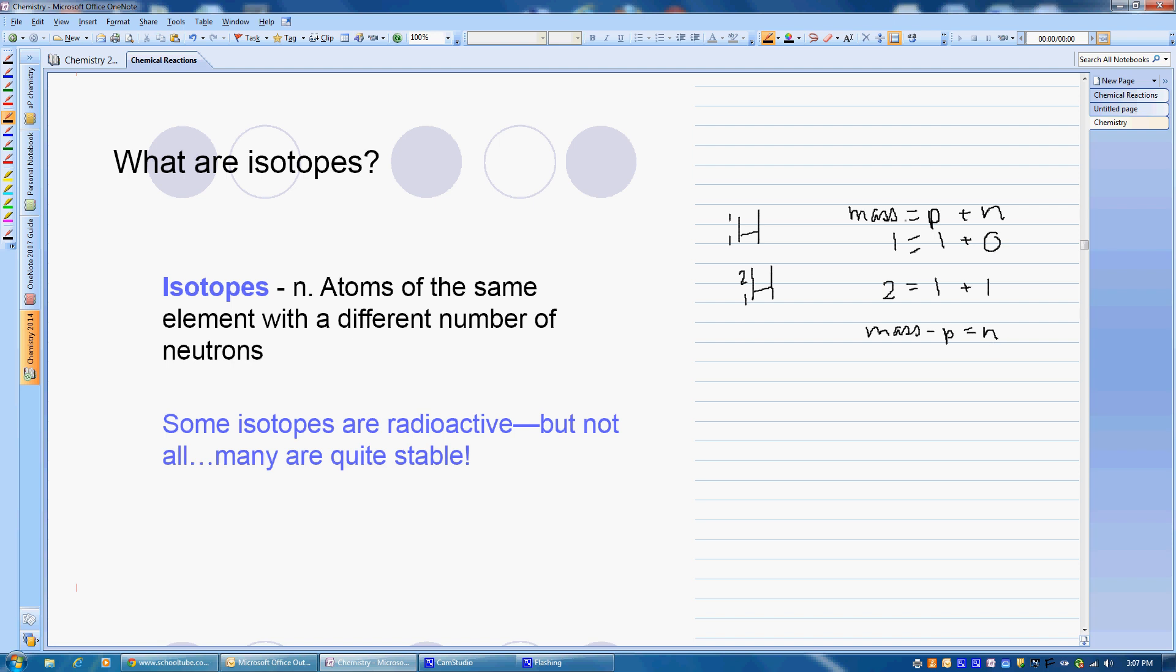Another way of looking at this is you can take mass minus protons to equal your neutrons. So when we have an isotope, this bottom number will always be the same. Right here, because that's your number of protons, that has to stay the same. Atomic number stays the same. But the mass number on top will be different because we'll have different numbers of neutrons, and so our mass will be different.